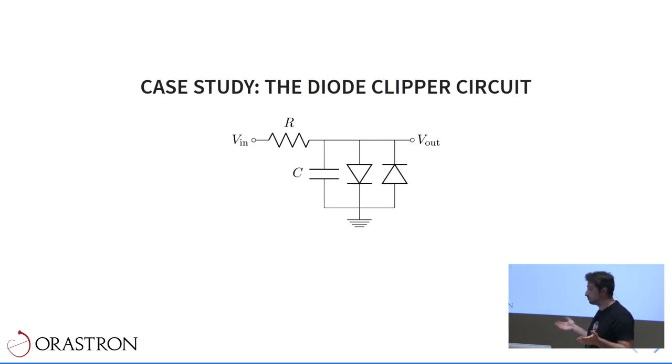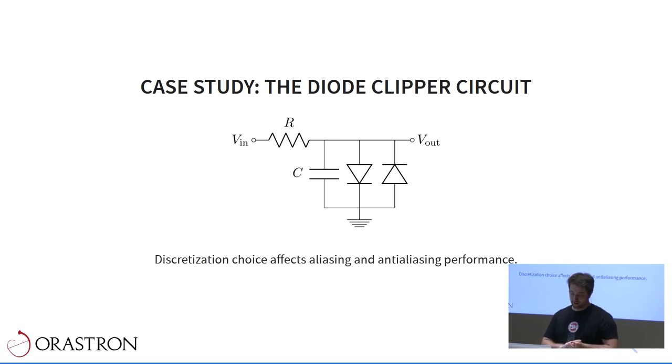We could apply our method with the simple real pole directly on the infamous circuit here. We found out a few things that I will not spoil so that you will come to see the poster. But the most relevant is that the discretization choice itself, apart from whatever technique you use, will affect the aliasing and therefore the anti-aliasing performance of the method.